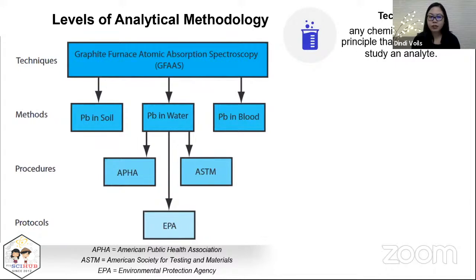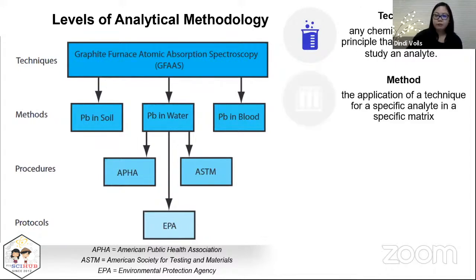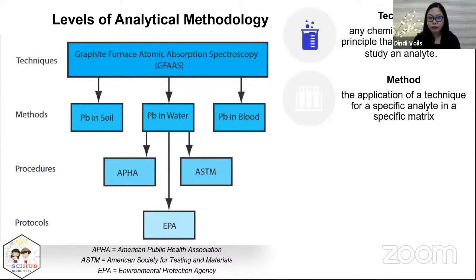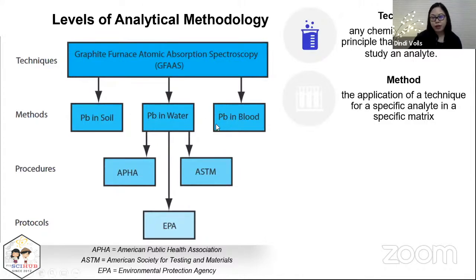Now that you have selected your technique, the second step is to determine the method for lead in water. A method is the application of a technique for a specific analyte in a specific matrix. The method you use for lead in water will be different from the method used if lead is in soil or in blood, because different matrices mean different interferences.